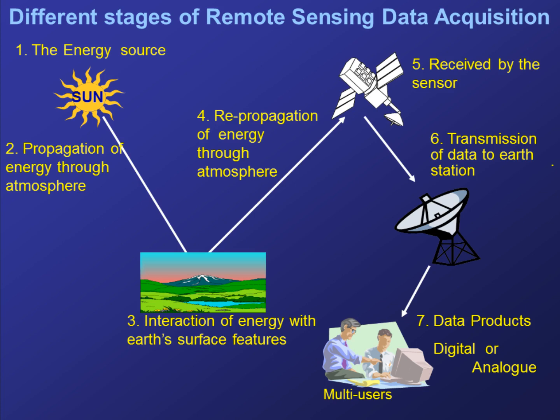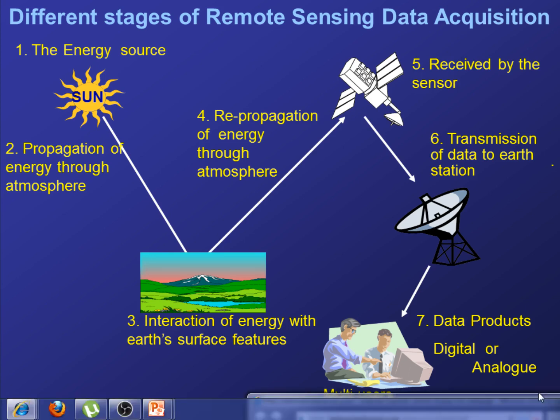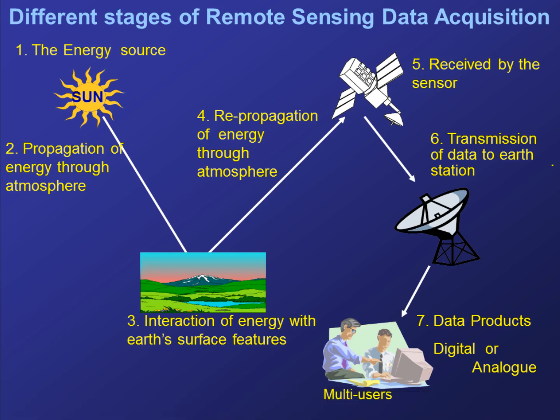In the seven steps, the first is the energy source, which is the sun. In remote sensing, the energy source is very important — it provides electromagnetic energy to the target of interest. The sun is a natural source of energy that provides light. The second step is the propagation of energy through the atmosphere. As energy travels from the source to the target, it comes into contact with and interacts with the atmosphere.